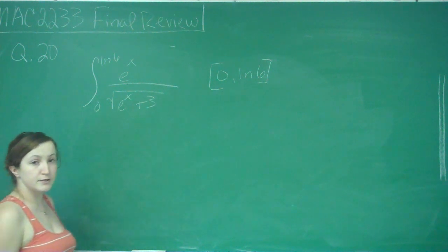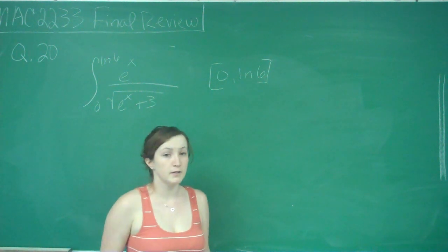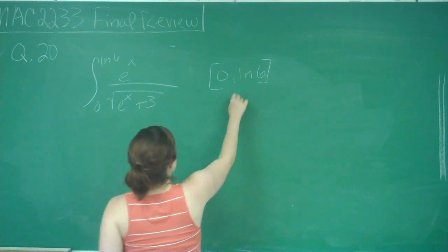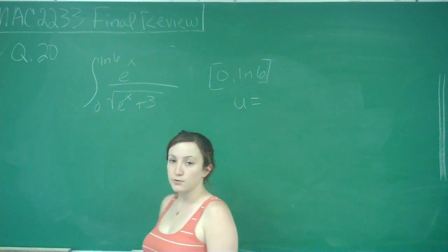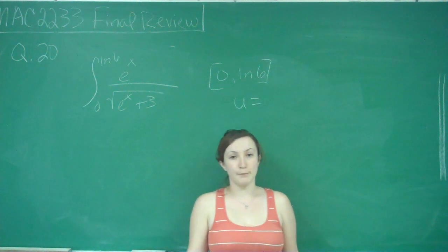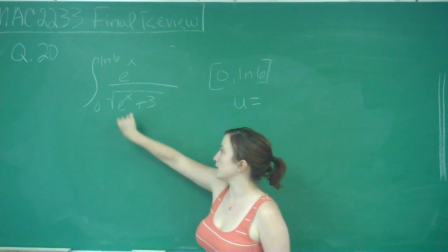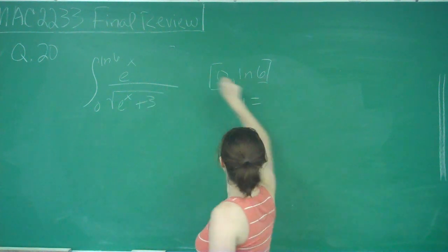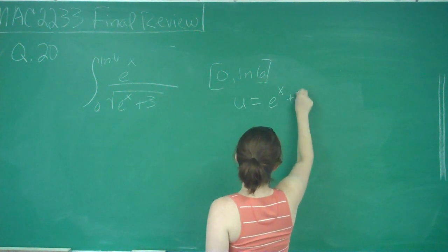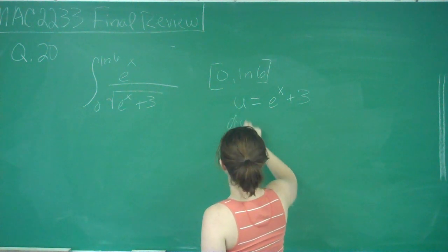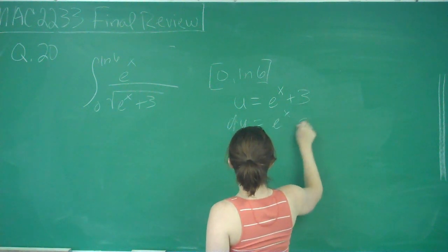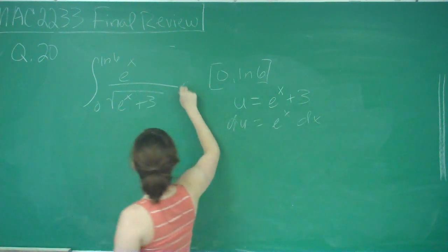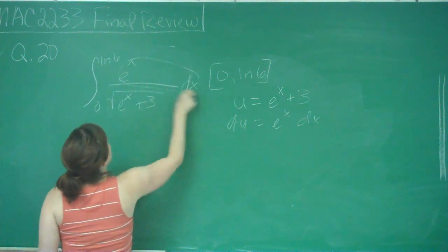So again, we're going to have to use u substitution. So get really familiar with that. And we're always going to substitute u to be whenever it's something within another function. So for us, it's going to be e to the x plus 3. And du then is equal to e to the x dx, which is nice because we have that here.